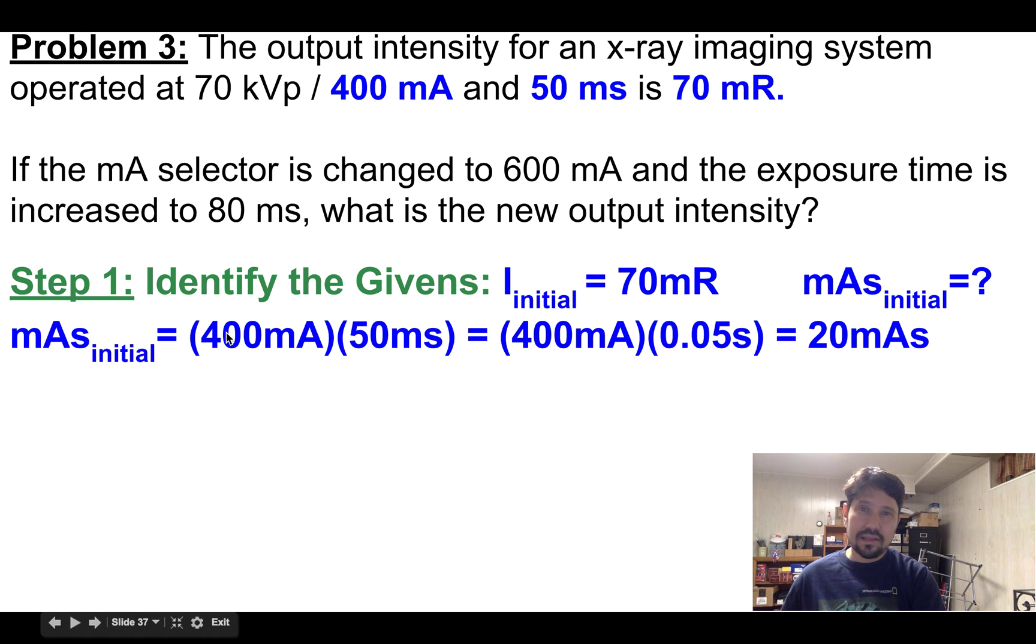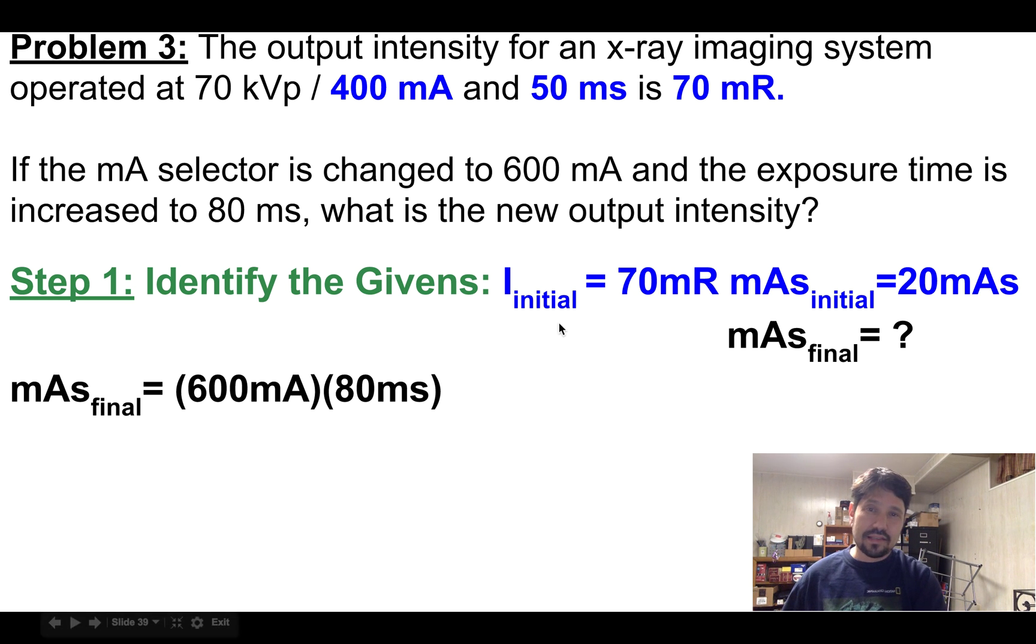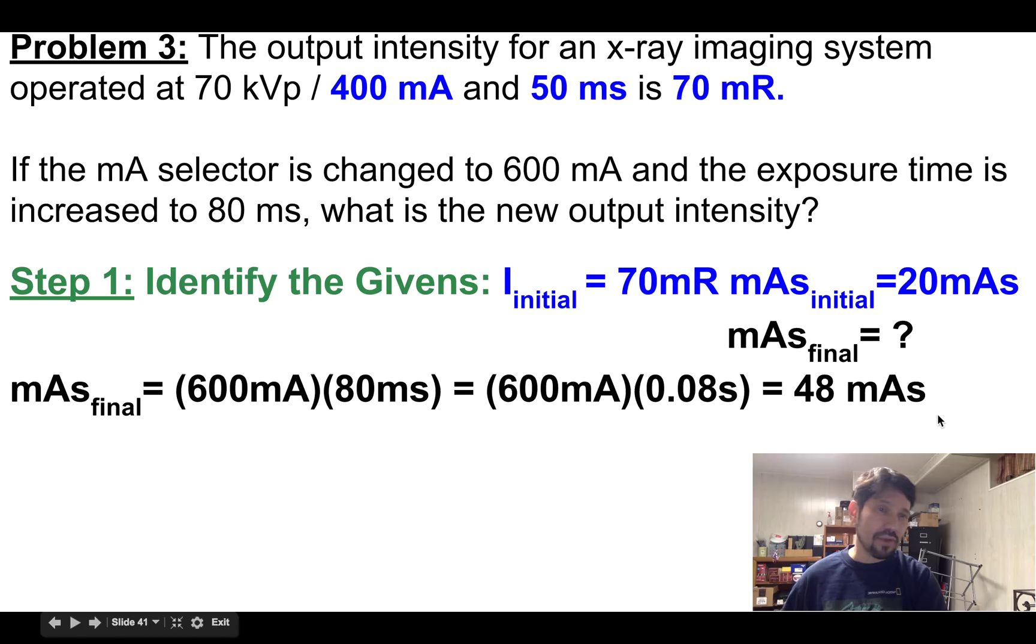So our initial mAs is 400 mA for 50 milliseconds. And for mAs, I can't have both milliamps and milliseconds. I only want milliamps per second. So I'll convert to seconds, 400 milliamps times 0.05 seconds. I've got an initial mAs of 20 mAs. My final mAs, again, I have to go through the math and take 600 mA for 80 milliseconds, scale milliseconds to seconds, to get that my final mAs is 48 mAs.